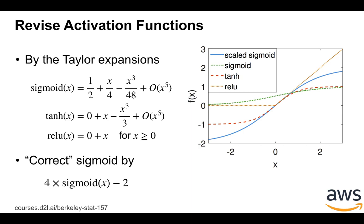So you can see from the right hand figure that the blue line is a scaled sigmoid. We can see that close to x equals to zero, the curve is almost identical to the tanh and the relu, which is very different to the original sigmoid, and this is the green line here.